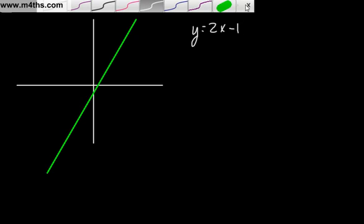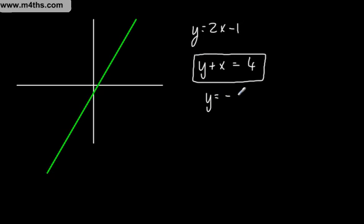If we have now the following, if we have y plus x is equal to 4, then can we graph that? Well yes we can. Straight line equation. You can plot points, or we could write this as y is equal to negative x plus 4, or y is equal to 4 minus x.